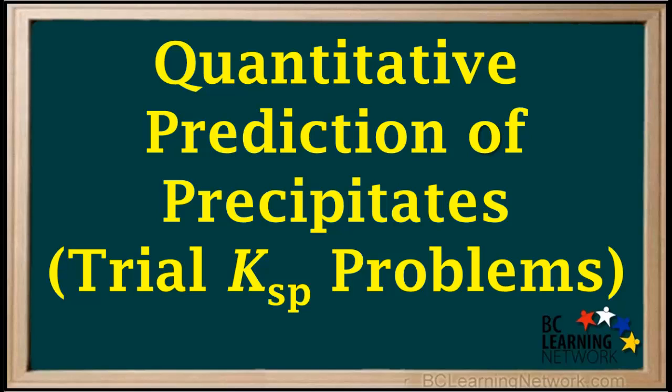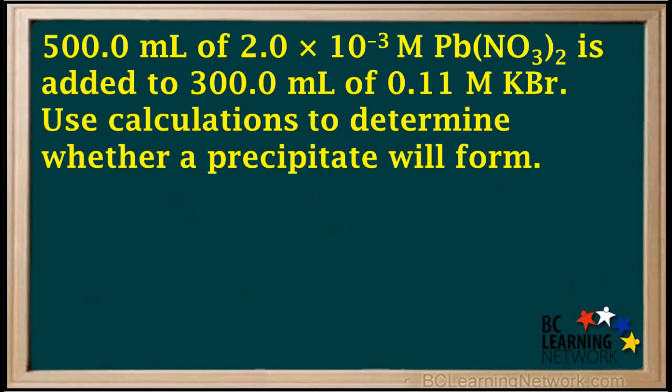We'll show you how to predict whether a precipitate will form when two solutions with given concentrations and volumes are mixed. We'll do this by going through an example. We're given that 500 milliliters of 2×10⁻³ molar Pb(NO₃)₂ is added to 300 milliliters of 0.11 molar KBr, and we're asked to use calculations to determine whether a precipitate will form.